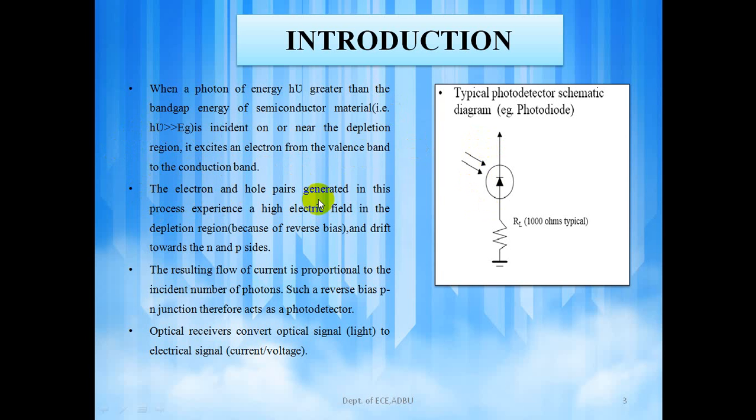The electron and hole pairs generated in this process experience a high electric field in the depletion region because of reverse bias and drift towards the N and P sites. Resulting flow of current is proportional to the incident number of photons. Such a reverse bias junction therefore acts as a photodetector that converts optical energy to electrical energy and therefore is referred to as an OE converter.